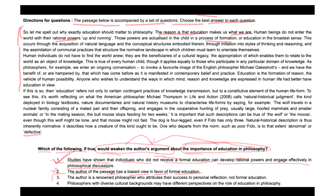Option three states: the author is a renowned philosopher who attributes their success to personal reflection, not formal education. This also doesn't directly address the general argument about the importance of education in philosophy. It raises a personal question and is completely opposite in nature — it doesn't weaken the author's argument to the key keyword.